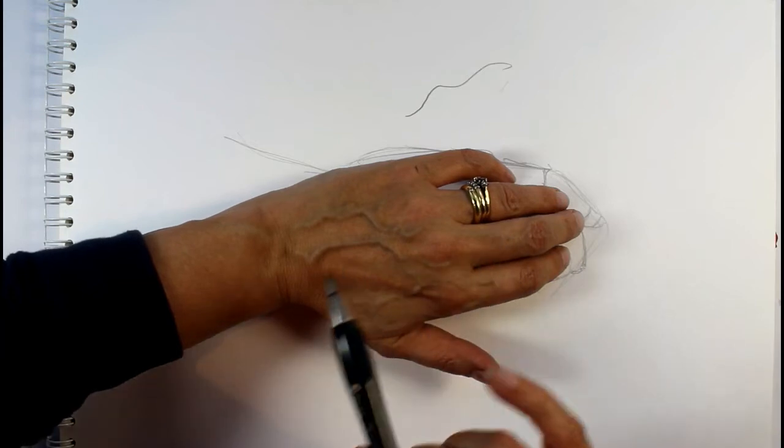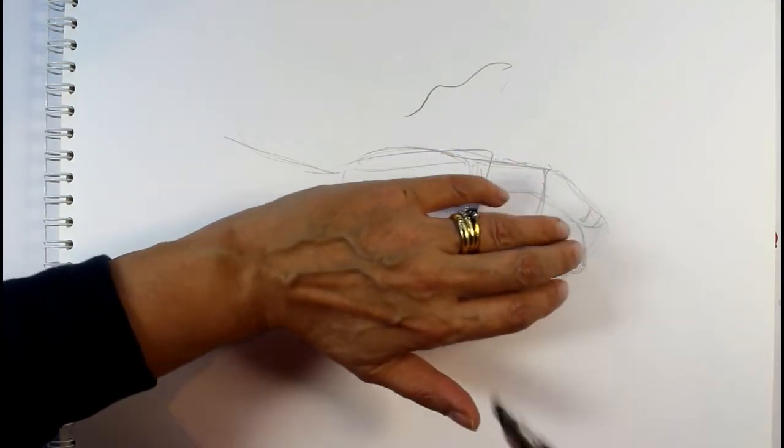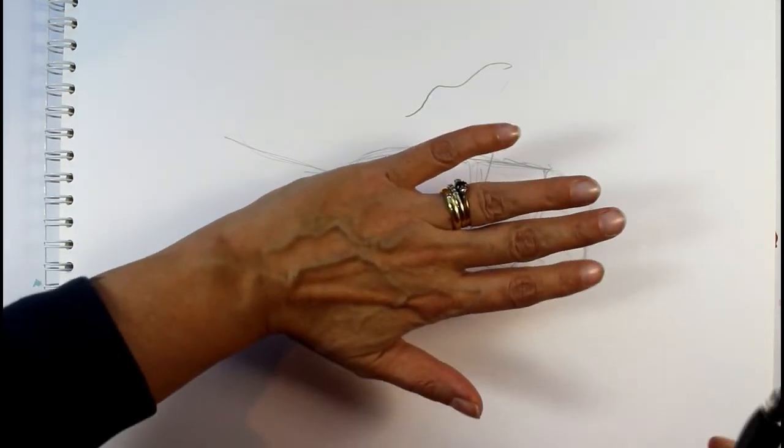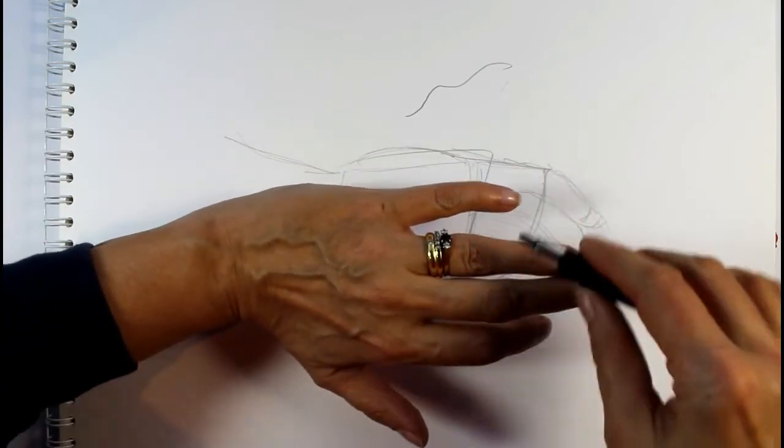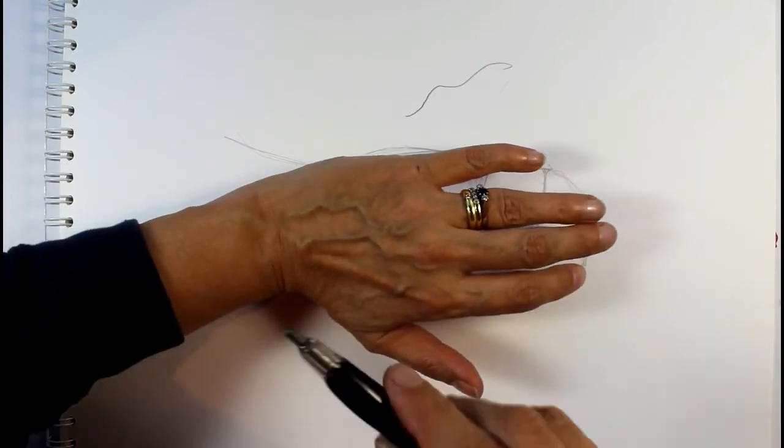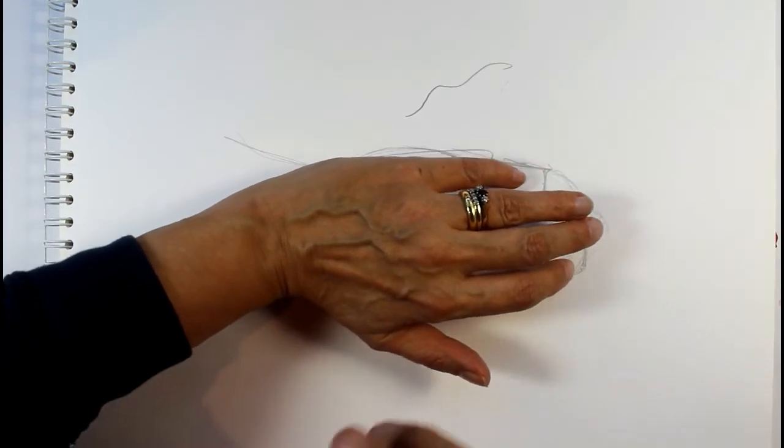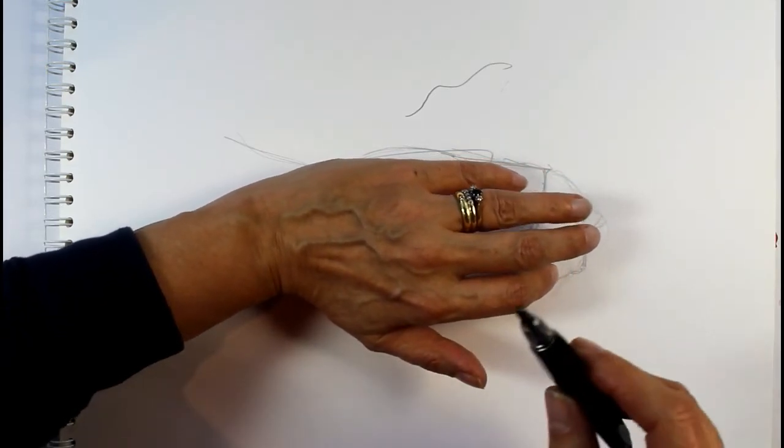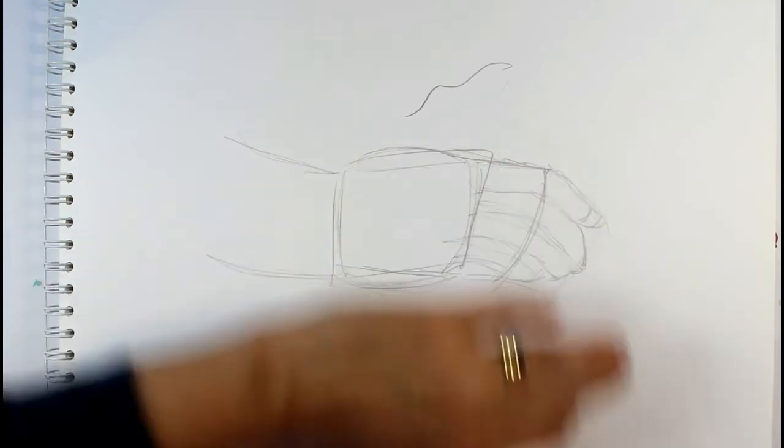However, if you put every single little line in that you could see, you could soon make my hand look like I'm about 90 years old. You can really overdo it by putting every single last line in, so just be careful about knowing when to stop and leaving it and how much detail you actually want to put in.